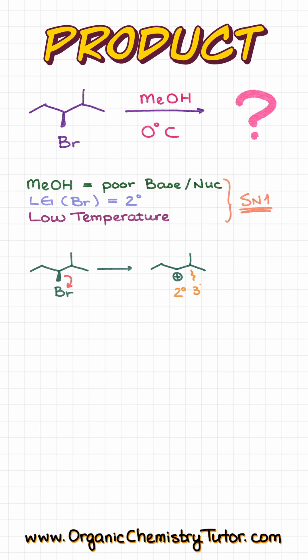which is right next to a tertiary position, which means that we are going to have a carbocation rearrangement. In order to facilitate the rearrangement, we are going to take the hydrogen with all of its electrons and move it onto the carbon where the carbocation is, giving us a now more stable tertiary carbocation.